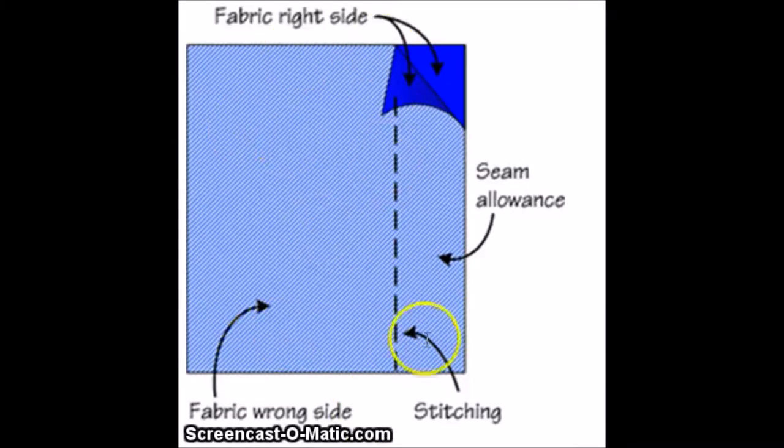This is a representation of some fabric, and as you see, the seam allowance is the distance between the edge of your fabric right here and where you have your stitching. That's where the needle would go and stitch down your fabric. So this part here is the seam allowance.